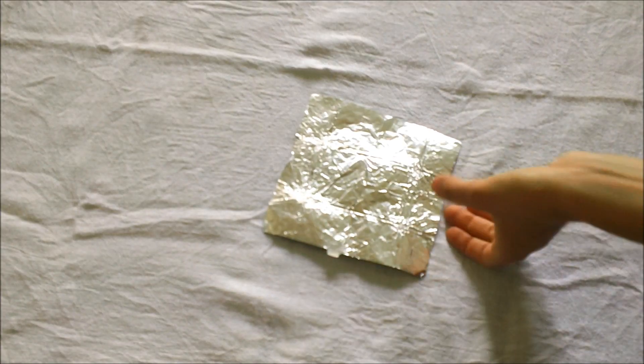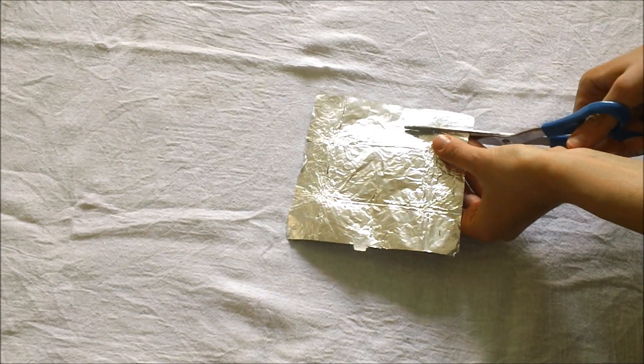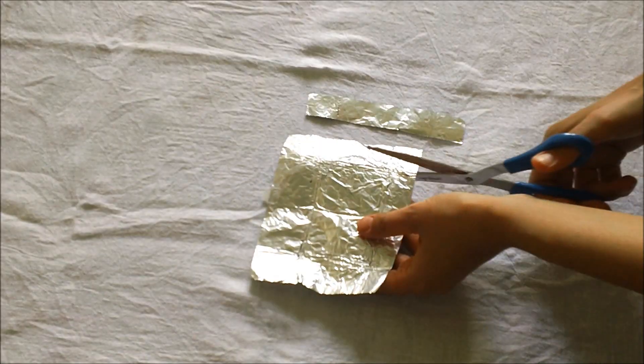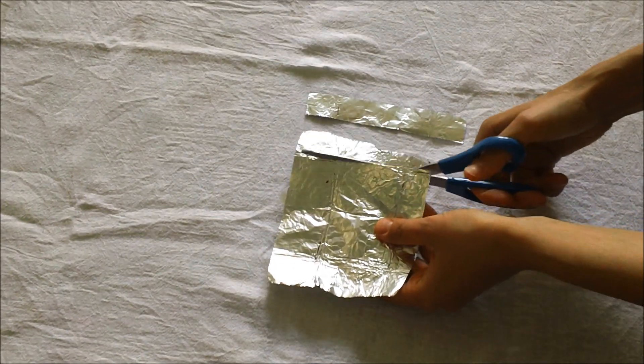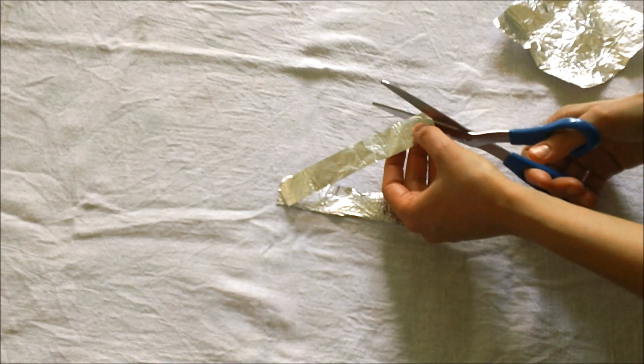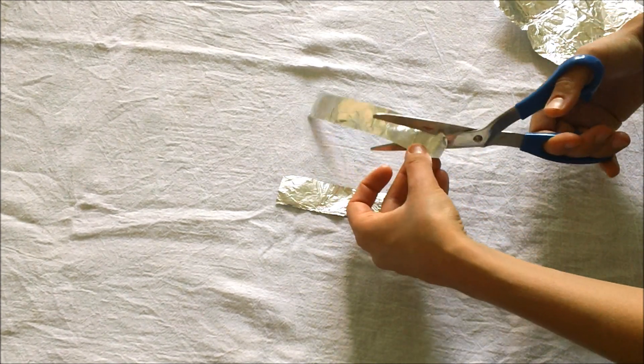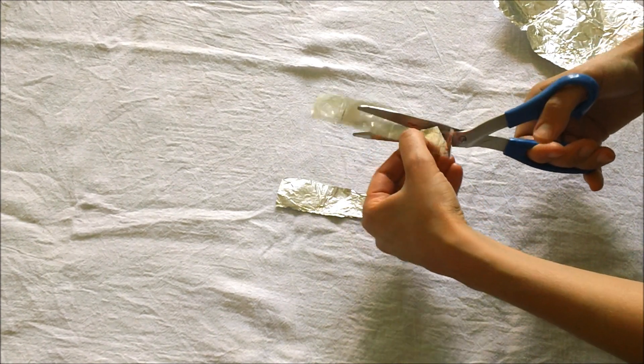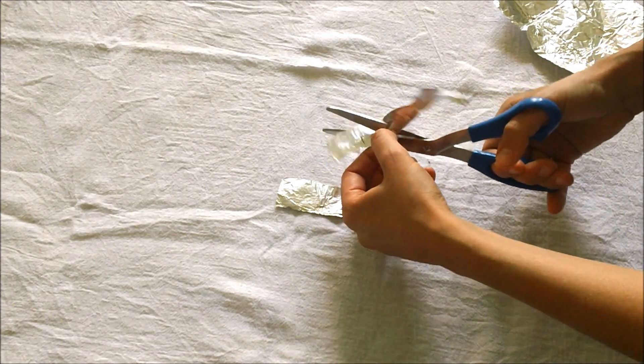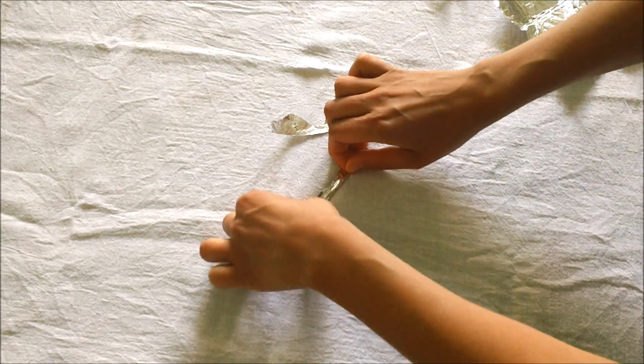First, cut two strips of aluminum foil or you can use chocolate wrappers like me and cut a wave pattern on the first strip. This is going to be the actual flower and with the second strip, just fold it up and twist it until it looks like a flower stem.